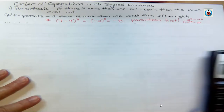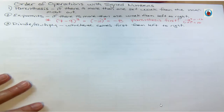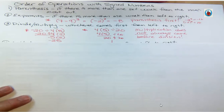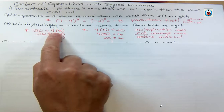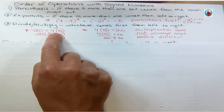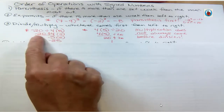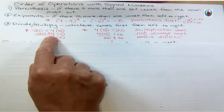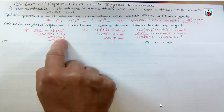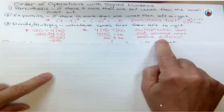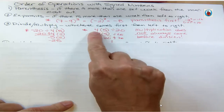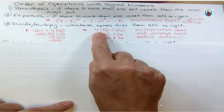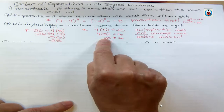Put things into the calculator exactly as you see them if you want to trust its answer. After exponents, multiply and divide — whichever comes first from left to right. For example: negative 20 divided by 4 times 5. The parentheses here just mean multiply. So we do negative 20 divided by 4 first, getting negative 5, and then multiply by 5 to get negative 25. Multiplication does not always come before division. If I wrote negative 4 times 5 divided by 20, multiplication comes first: 4 times 5 is 20, then divide by 20 to get 1.